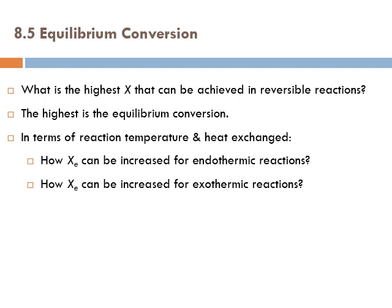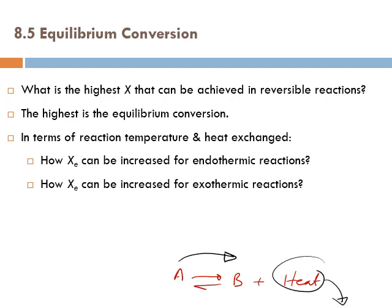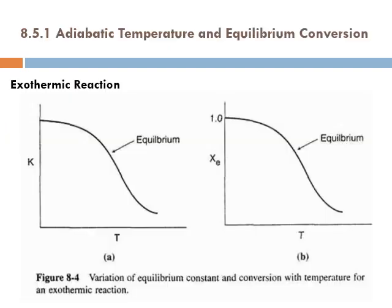How can equilibrium conversion be increased for exothermic reactions? For exothermic reactions — for example, A goes to B plus heat — in order to shift the equilibrium forward we need to remove heat. Therefore, it is preferred to operate at lower temperature, which is preferred thermodynamically but not kinetically.